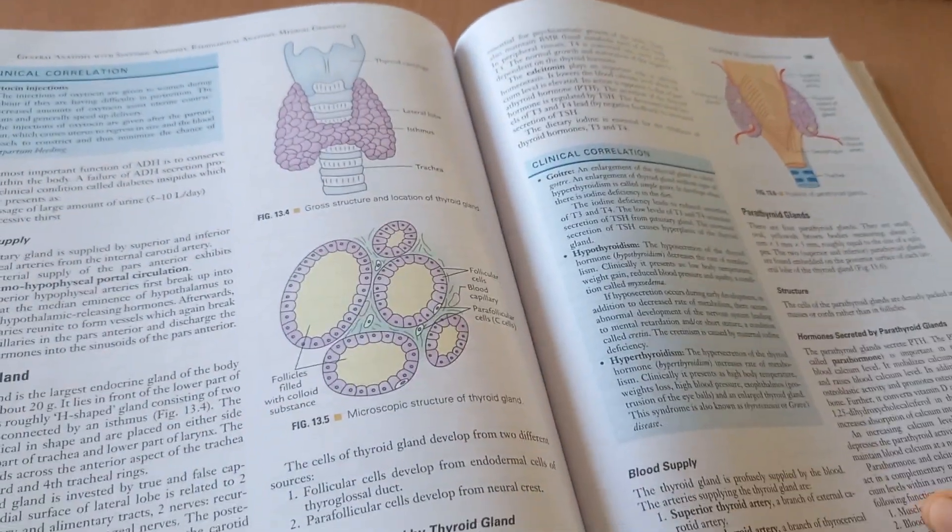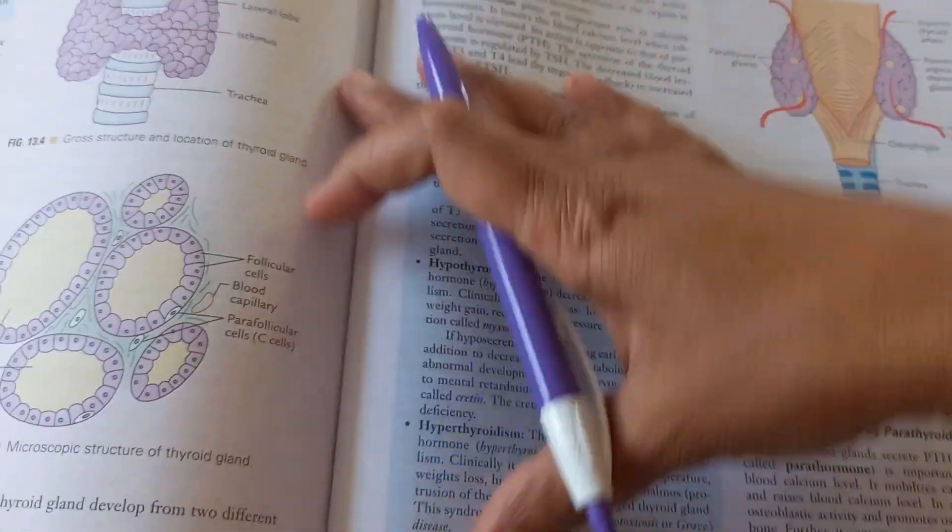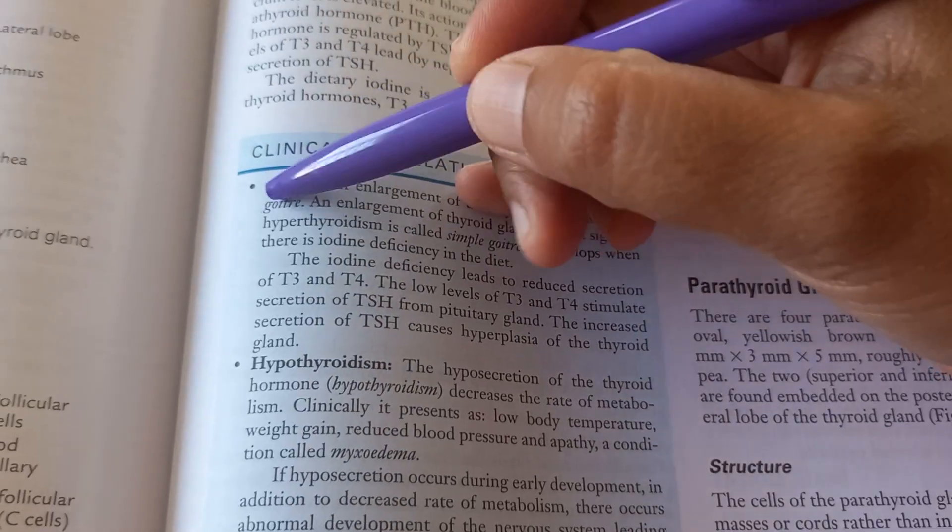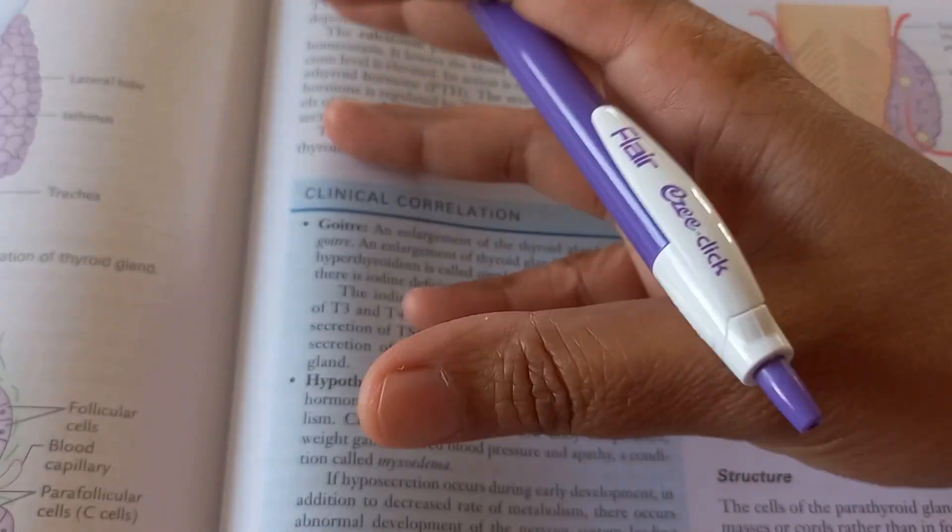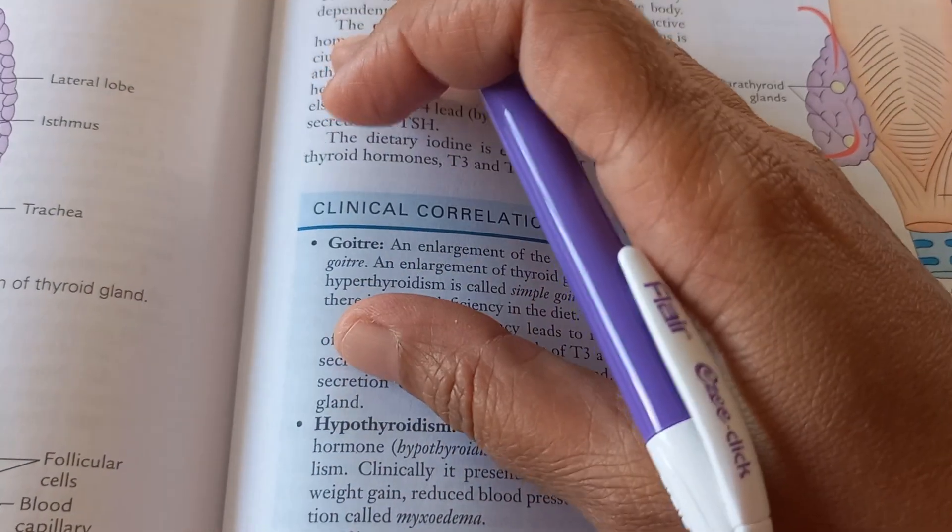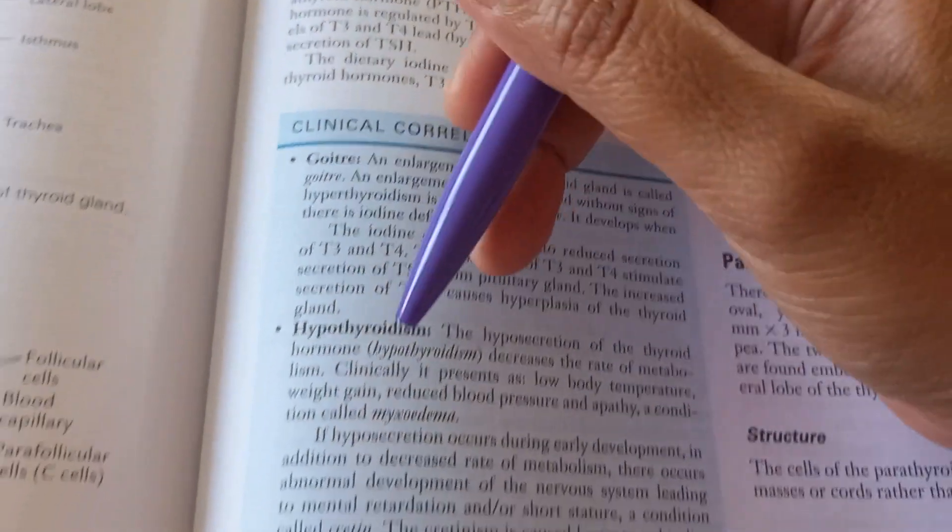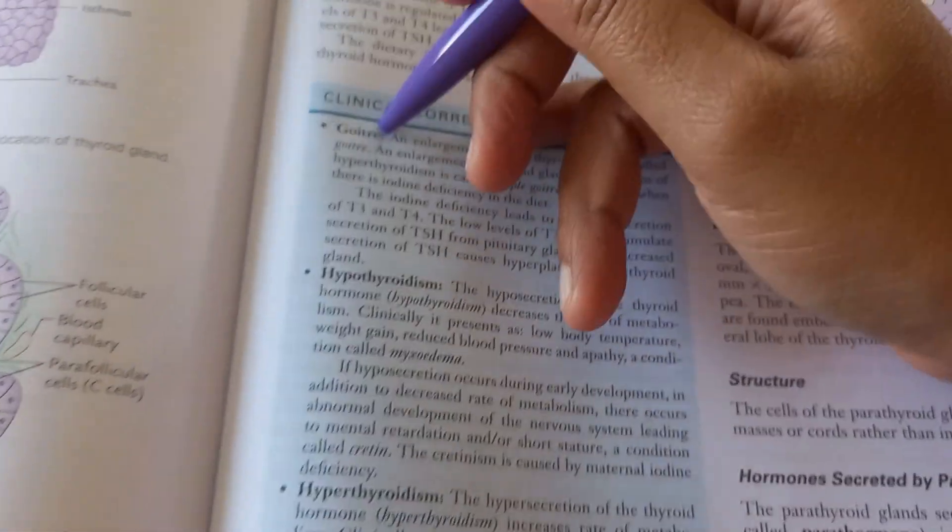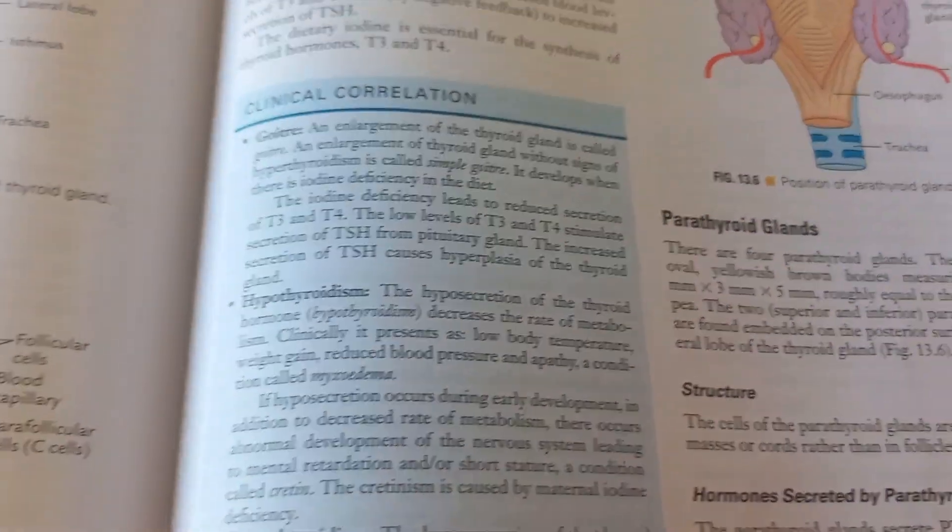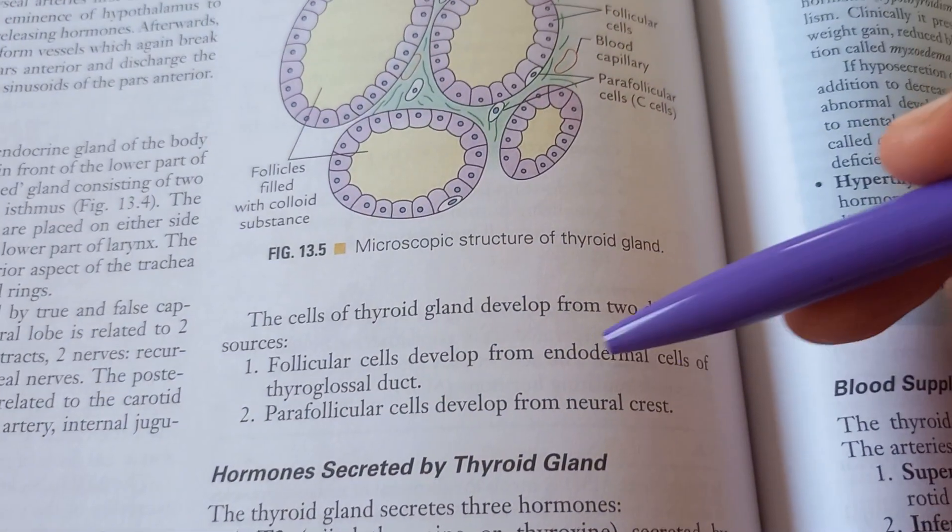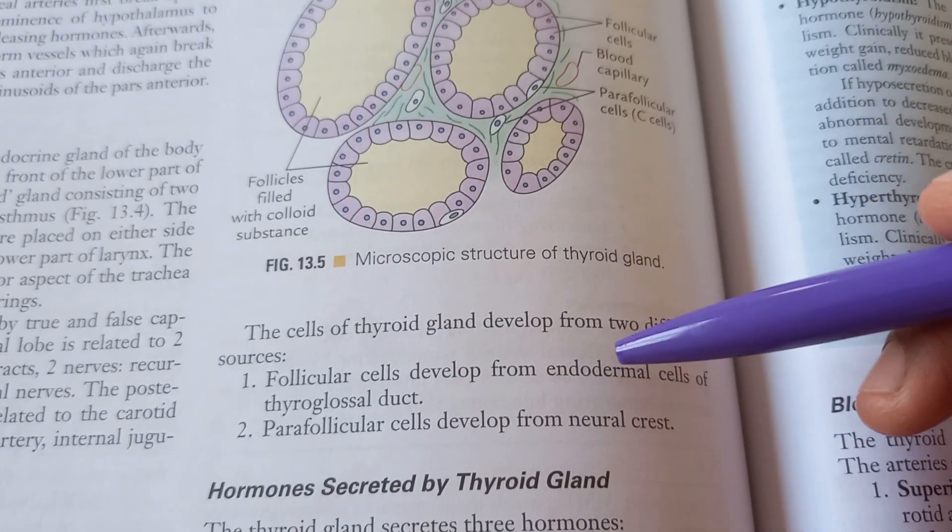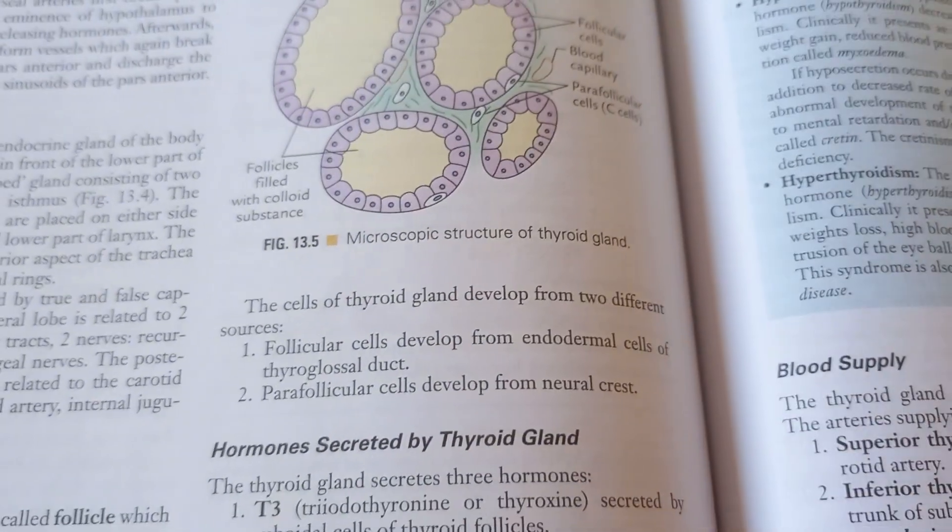MCQs will be helpful. And in this, they have also covered the clinical correlation. Major diseases you should know, like of thyroid, you should know of goiter. That is nothing but the swelling of the thyroid. Swelling of thyroid is called goiter. It can become hypothyroidism or hyperthyroidism. Then you have hypo and hyper. So goiter is nothing but the enlargement of the thyroid. So it is endodermal in origin, it looks like.